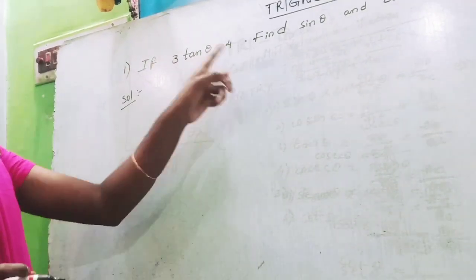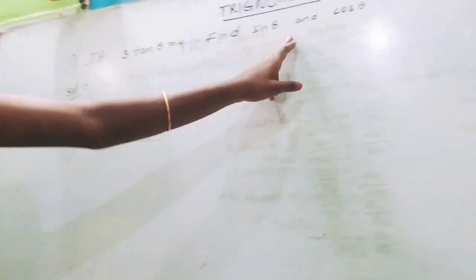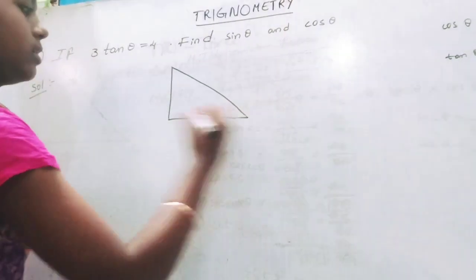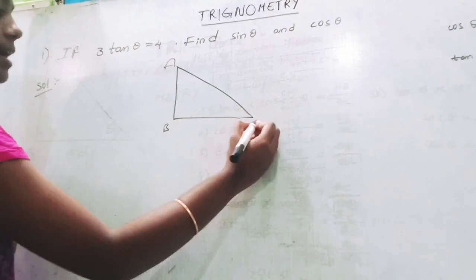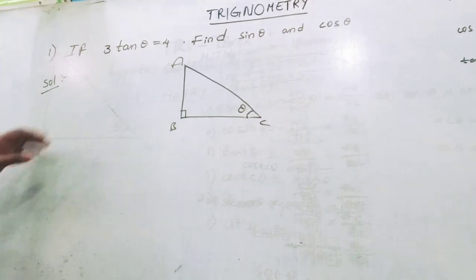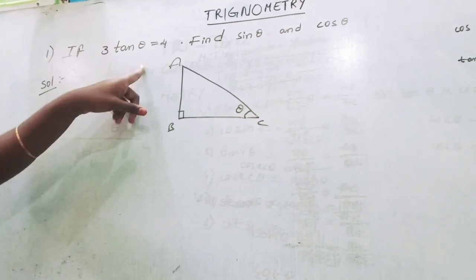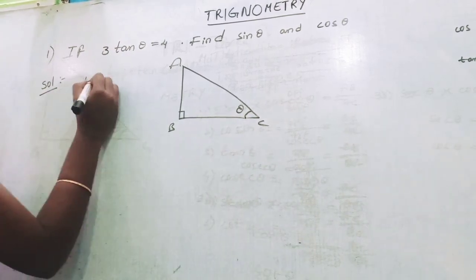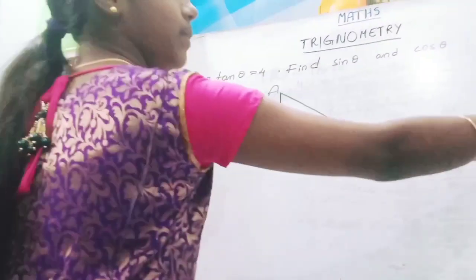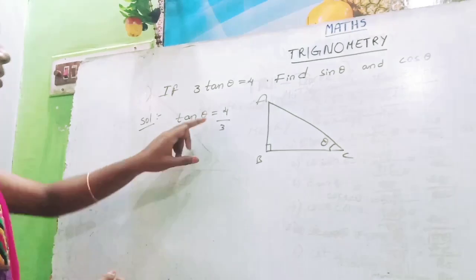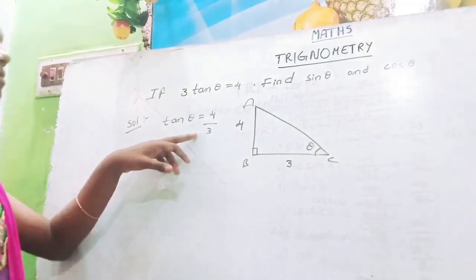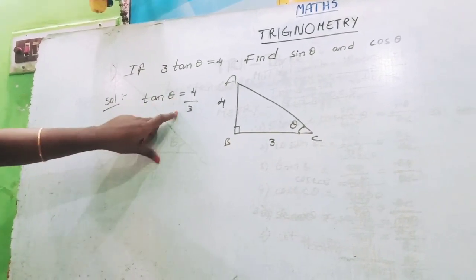If 3 tan theta is equal to 4, then we have to find sin theta and cos theta. Let's draw a right angle triangle and name the points as A, B and C. B is 90 degrees and C is theta. We can write 3 tan theta equals 4 as tan theta equals 4 by 3. Tan theta is opposite by adjacent, so 4 is the opposite side and 3 is the adjacent side.